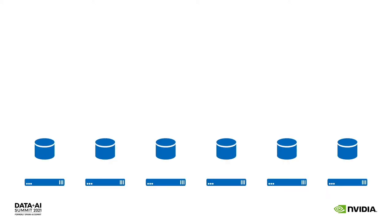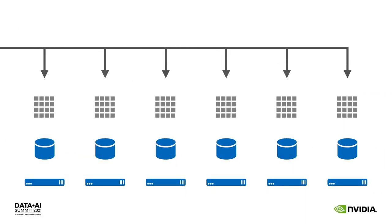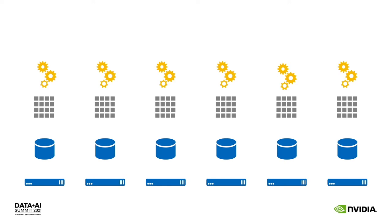The Hadoop architecture relaxed some constraints of relational databases to make it possible to solve bigger problems at scale. In this case, our source of truth is a distributed file system. We spread data on ingest across physical files on different nodes, and compute jobs migrate to the nodes that contain the data they'll operate on. The advantage is that unlike a relational database, you can scale it out arbitrarily — by adding more nodes you add more storage and more compute.